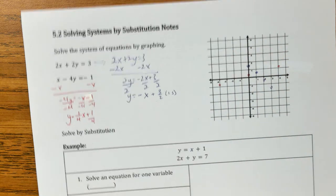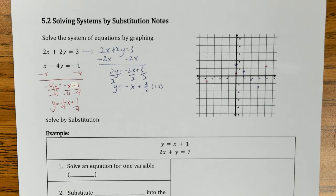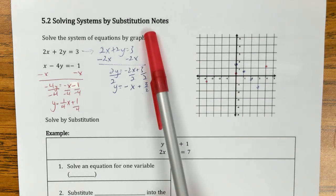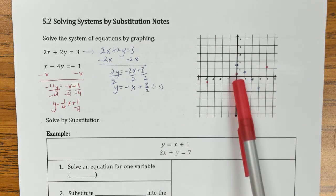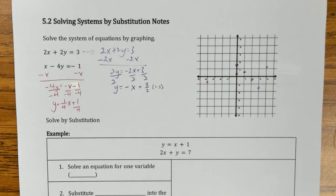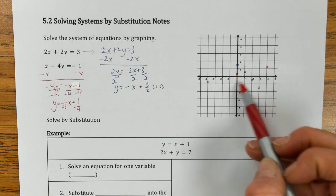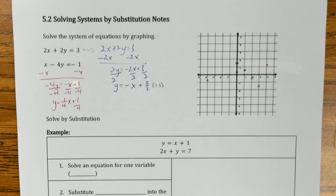The reason why I wanted you guys to do this is I wanted you to see that maybe there are going to be systems out there where graphing is probably not going to be the best method of solving. It looks like they could cross at a decimal or a fraction number. So graphing is not the best for when that happens. Let's move on and see another method.